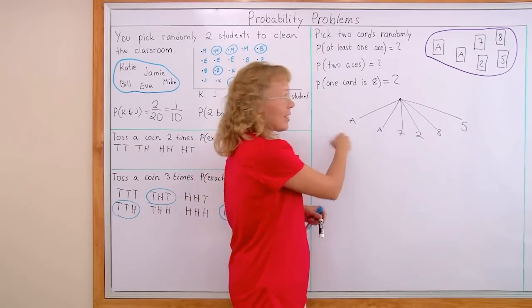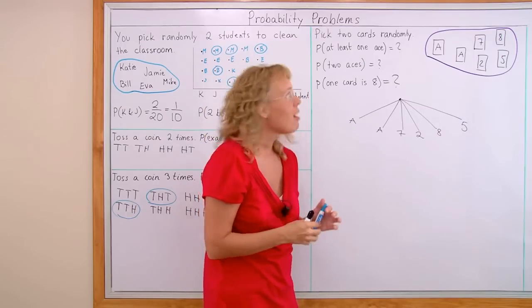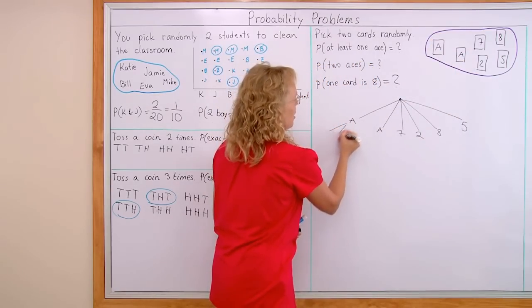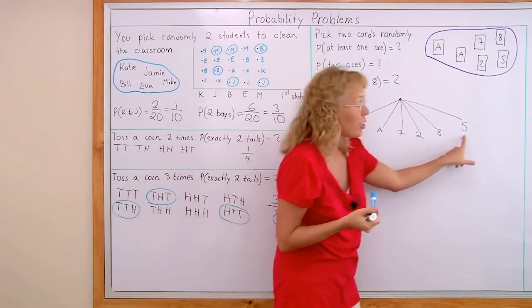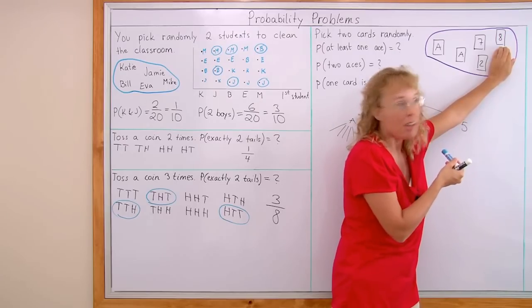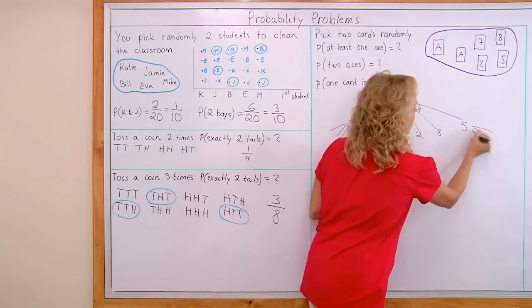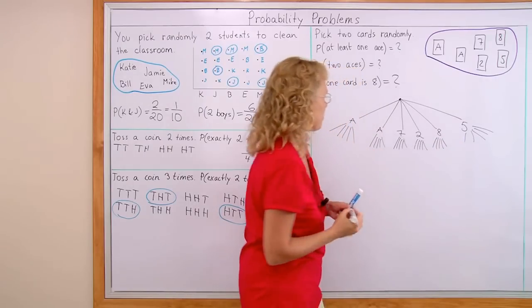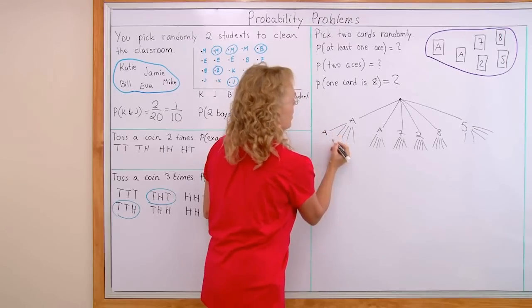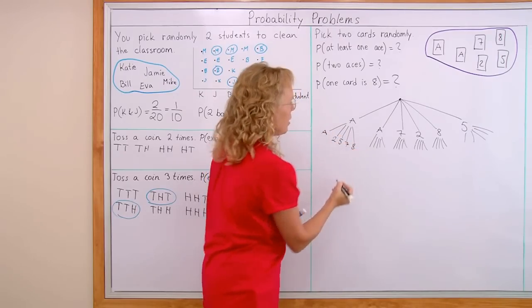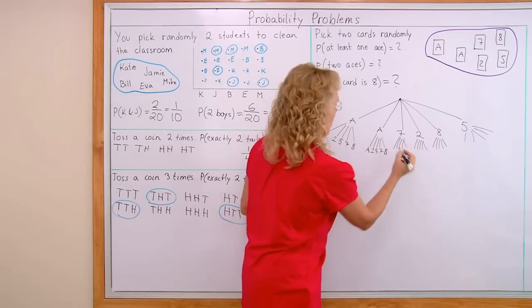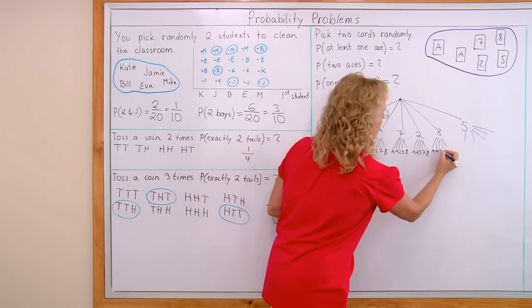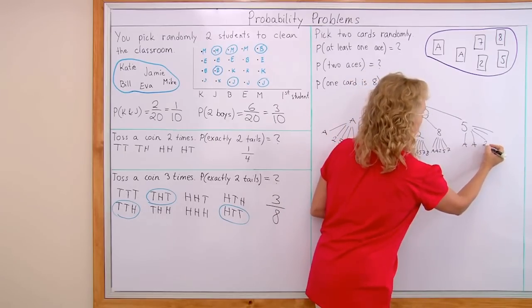If I pick ace as the first card, then for the second card I don't have that one anymore — I have those 5 as possibilities, so from here 5 branches go out. The same is true for each of the other first-card choices — 5 branches each. So the second card branches show: ace, 2, 5, 7, 8 (varying by which card was picked first), giving 6 times 5, or 30 possible outcomes in total.